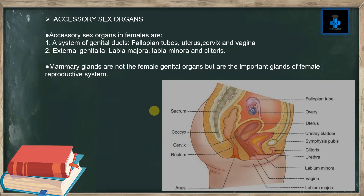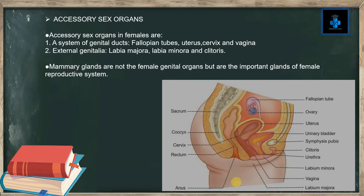Accessory sex organs in females include: number one, a system of genital ducts which includes the fallopian tube, which connects the ovary to the uterus, the uterus itself, the cervix, and the vagina. It also comprises external genitalia, which includes the labia majora, labia minora, and clitoris — these are like folds.